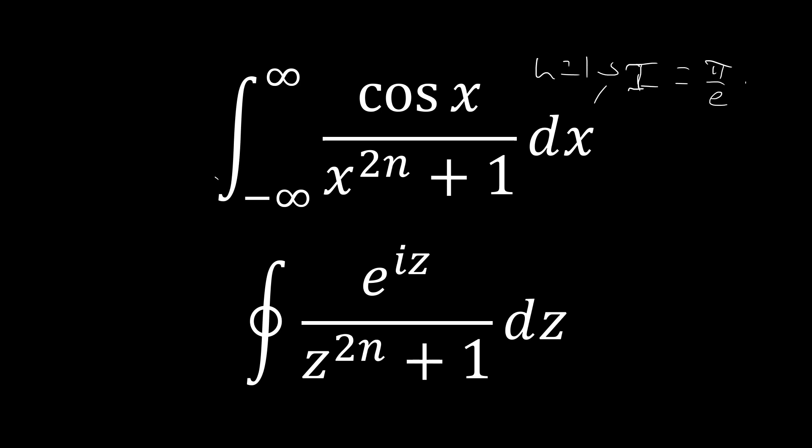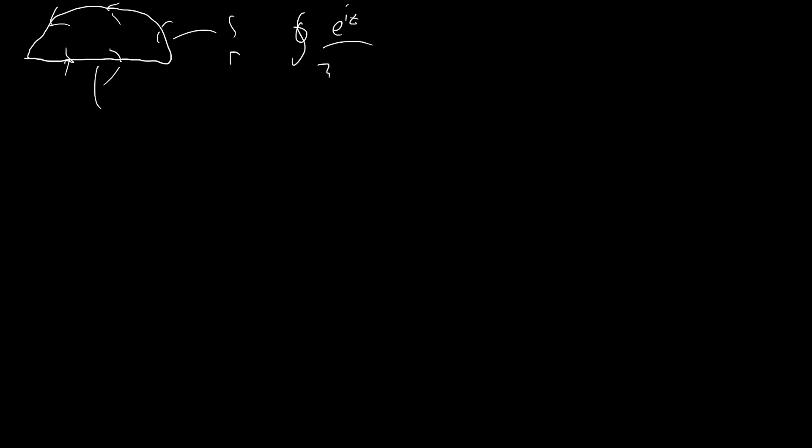The way we're going to do this is we're going to convert it into the real part of a contour integral. So without any further ado, let's jump right in. The first thing we're going to do is discuss our contour. We're going to be using a normal semicircular contour in the upper half plane. What we're integrating over here is e to the iz over z to the 2n plus 1 dz, because when we take the real part of that, it's going to turn into the original function that we were integrating at the beginning.